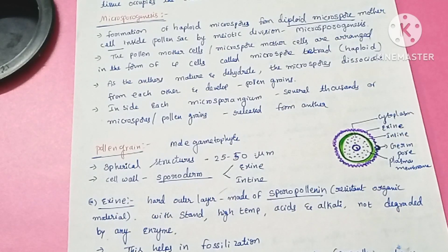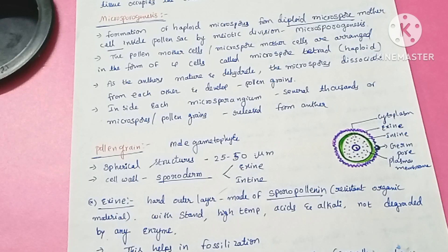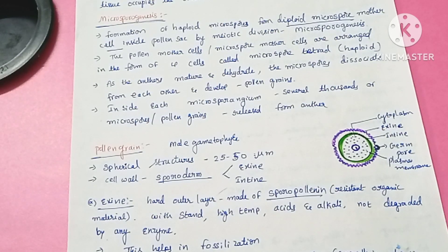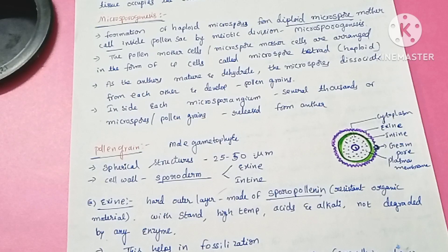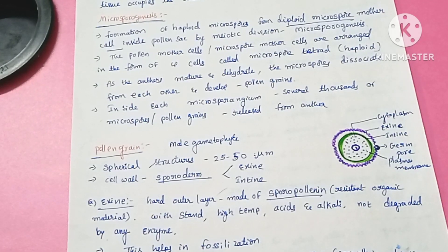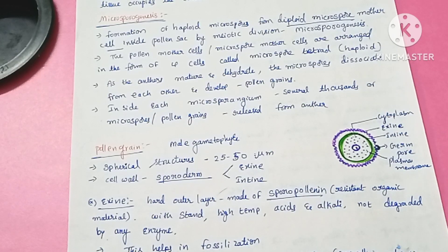Hello everyone, this is Latha Akula. In this video we are going to study about the male gametophyte, that is the pollen grain. In the last video we studied about microsporogenesis, where haploid microspores are formed from a single microspore mother cell, arranged in the form of a tetrad. When the anther matures, these microspores dissociate and develop into pollen grains, which consist of male gametes.